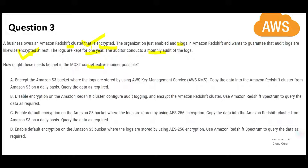Options A and D look similar, so we'll come back to them. Option B says disable encryption, configure audit logging, then re-encrypt the Redshift cluster. But disabling encryption does not make the existing data unencrypted — it remains encrypted through the snapshot procedure. Also, encrypting the Redshift cluster only encrypts the database data, not the audit log. So option B does not address the problem and is wrong.